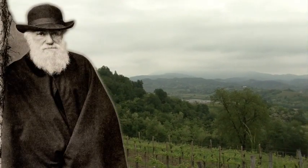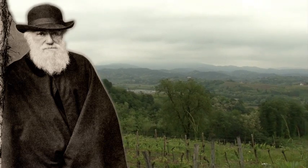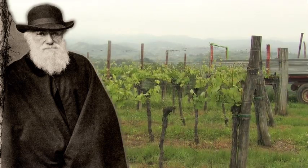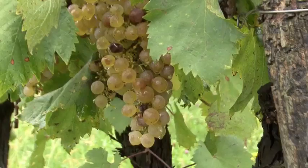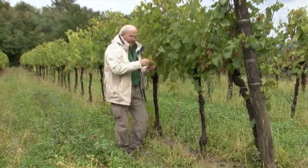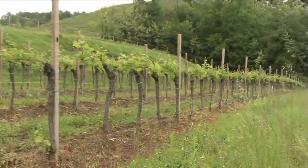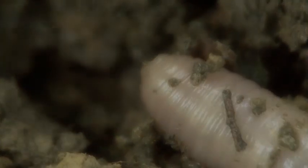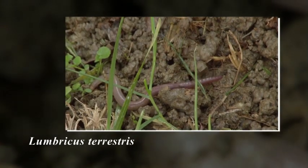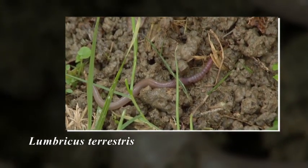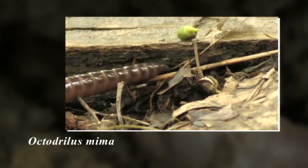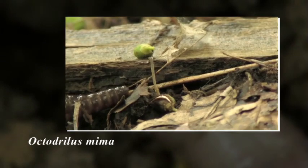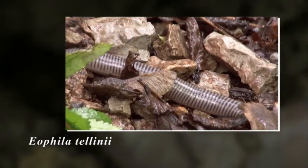When we behold a wide turf-covered expanse, we should remember that its smoothness, on which so much of its beauty depends, is mainly due to all the inequalities which have been slowly levelled by worms. The plough is one of the most ancient and most valuable of man's inventions, but long before he existed, the land was in fact regularly ploughed, and still continues to be ploughed, by earthworms.